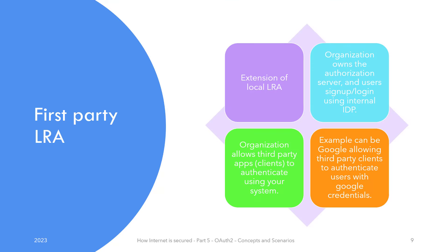First-party LRA is an extension to local login, registration, and authorization where not only do you manage user login and registration using in-house servers, but you also provide third-party apps services to authenticate using your system, acting as their identity provider and OAuth server. From our earlier example, Google is implementing first-party LRA.